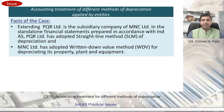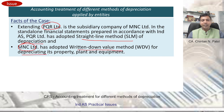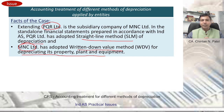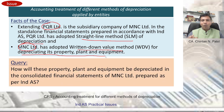The issue under consideration is where a subsidiary company, PQR Ltd, follows the Straight Line Method (SLM) of depreciation, and the holding company, MNC Ltd, follows the Written Down Value (WDV) method for depreciating its property, plant and equipment. When the financials of PQR Ltd are lined up and consolidated, what should be the treatment?